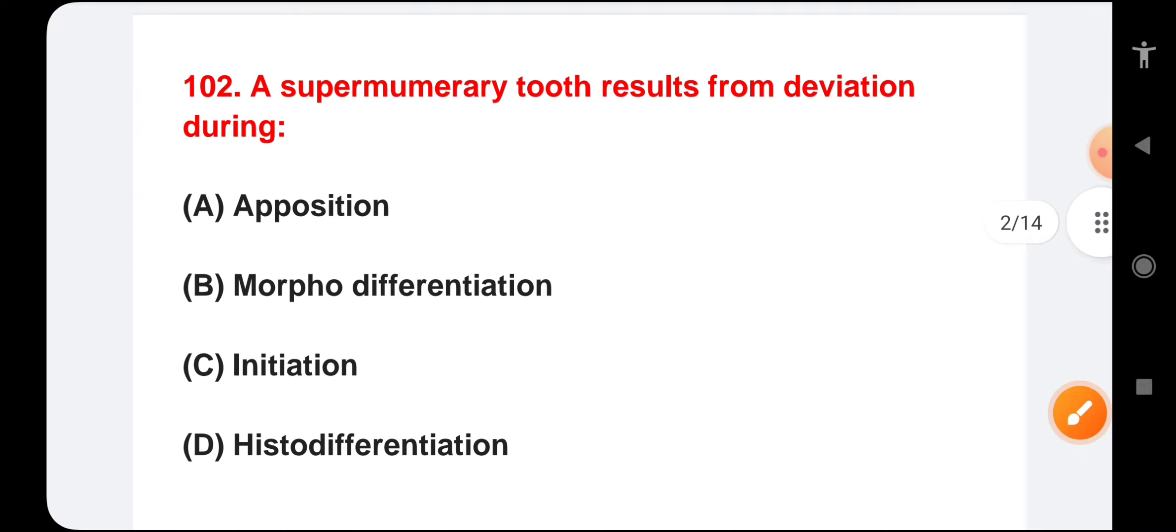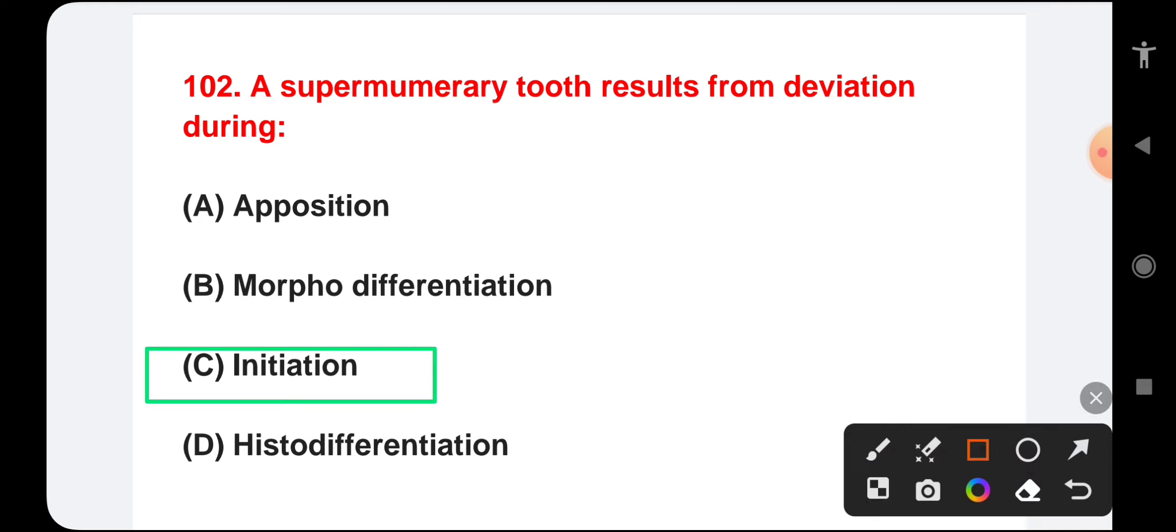A supernumerary tooth results from deviation during apposition, morphodifferentiation, initiation, or histodifferentiation. Supernumerary teeth is an extra tooth which develops beyond the normal number. It typically occurs during the process of initiation when the tooth germ is formed. So the correct answer is initiation.